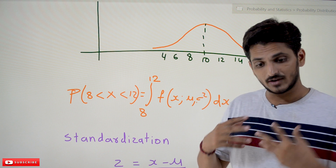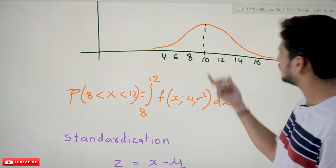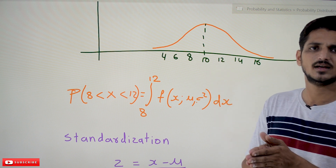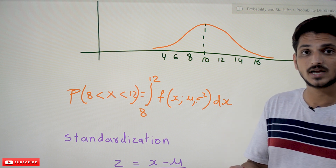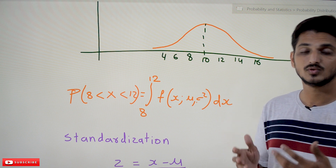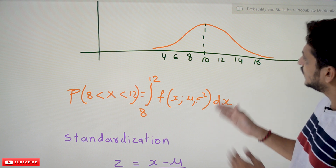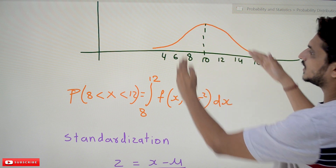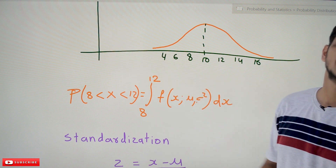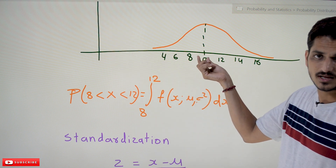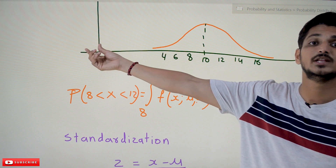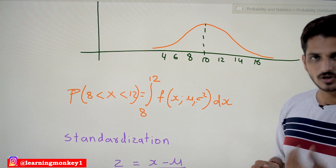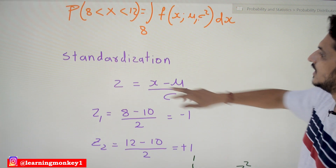In our last class we already discussed the standard normal distribution and the probability table has been provided for it. Can we use that same probability table to find the probability of 8 to 12? Yes, there is a way. We will understand how, and at the end we will understand why the two are the same. We have to convert this normal distribution into the standard normal distribution.